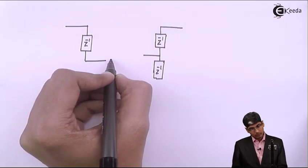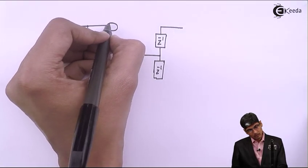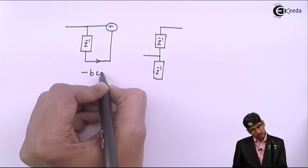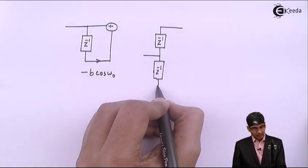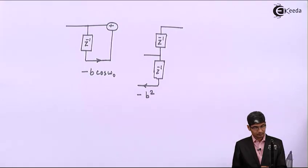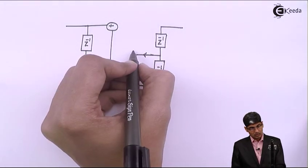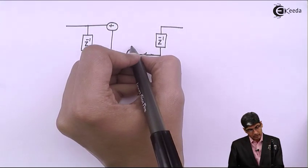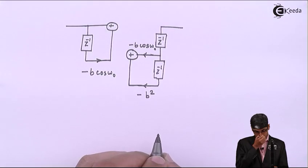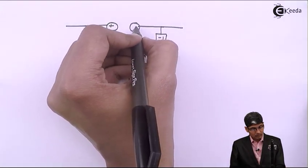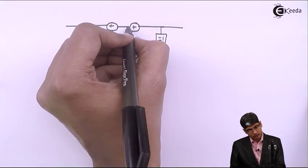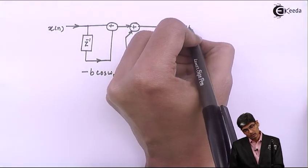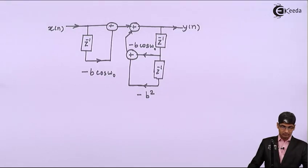From the numerator side, one adder block is required with coefficient minus b·cos(ω₀). From the denominator side, there are two coefficients: minus b² from z⁻² and the other from z⁻¹. I draw an adder to make this clear. X(N) comes in at the input and Y(N) goes out at the output.